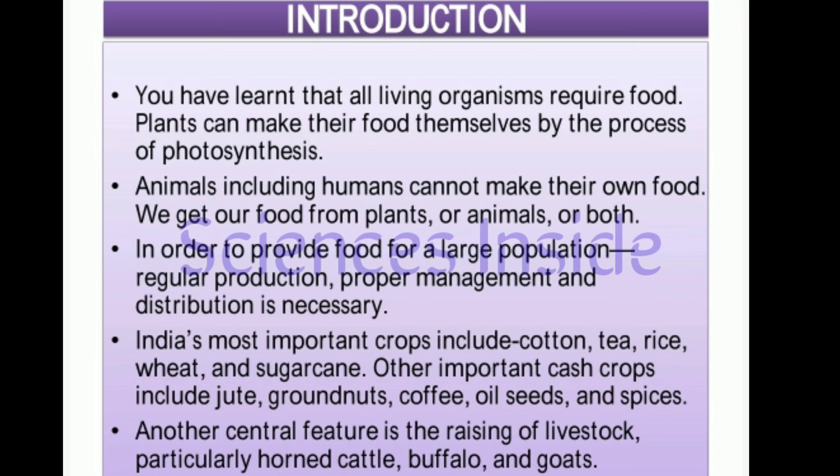All living organisms require food. Plants can make their food themselves by the process of photosynthesis — you have done this chapter in your previous class. Animals, including humans, cannot make their own food; we get our food from plants, and our food can be from animals also.